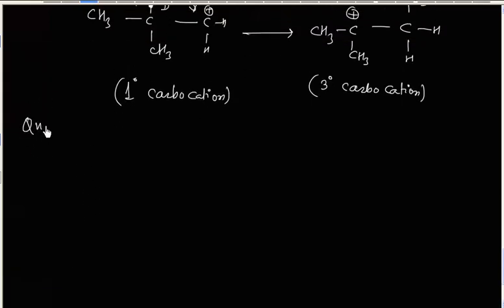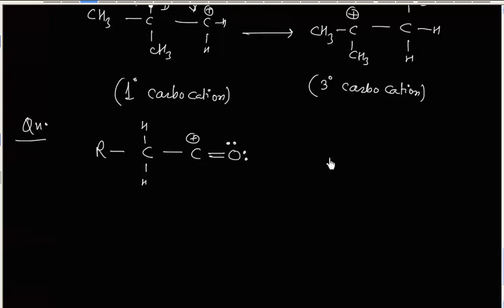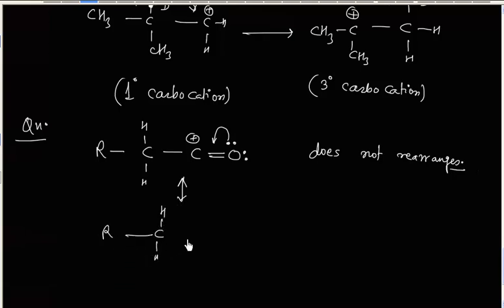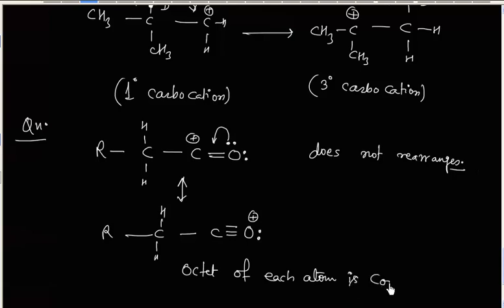Another important point: this carbocation — the acylinium ion — does not rearrange. The reason is that it is stabilized by resonance of the lone pair of oxygen. In this resonating structure, the octet of each atom is complete. Because this resonating structure is very stable, the acylinium ion does not rearrange.